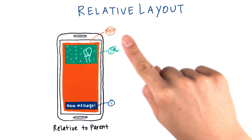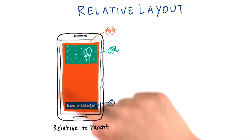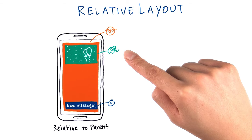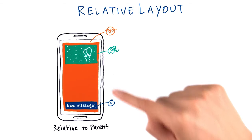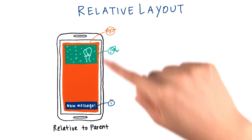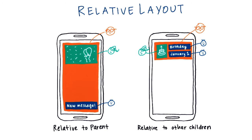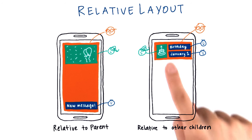Do you remember Ray, the relative layout? He's the dad, and he's represented by this view group here. He helps the children views be positioned within this container. With a relative layout, you can position children relative to the parent, such as the top of the parent or the bottom of the parent. The other option is to position children views relative to other children.